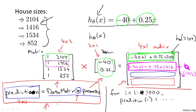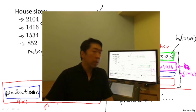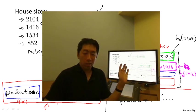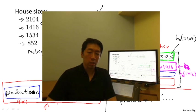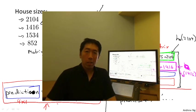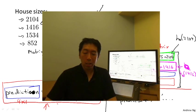So that's it for matrix-vector multiplication, and we'll make good use of these sorts of operations as we develop linear regression and other models further. In the next video, we're going to take this and generalize it to the case of matrix-matrix multiplication.